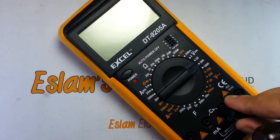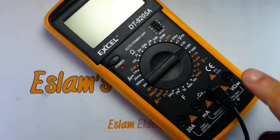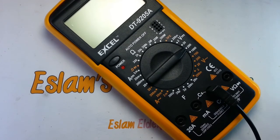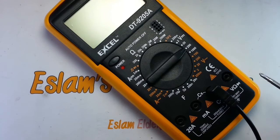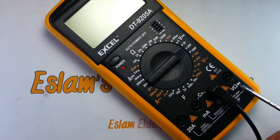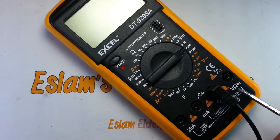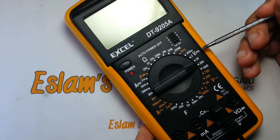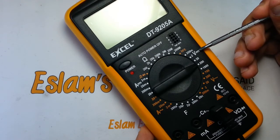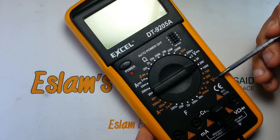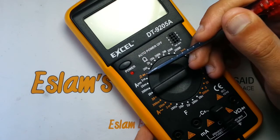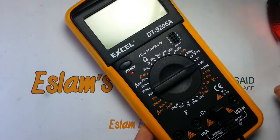The connector marked with COM is the common connector where we attach the black wire and never remove. The next connector on the right is marked with three symbols: diode for diode measuring and continuity, ohm symbol for resistance measure, and V symbol for voltage measuring. If we look at the cursor, we will find the same symbols: DC voltage, AC voltage, ohm for resistance, diode, and continuity.